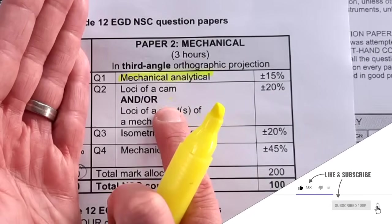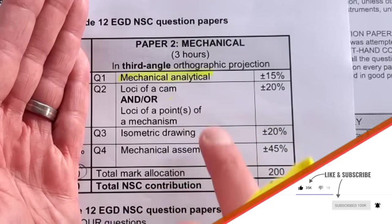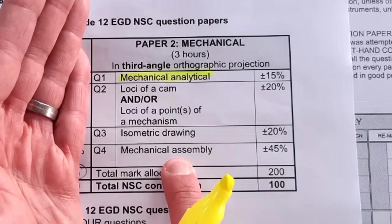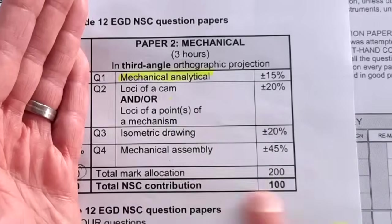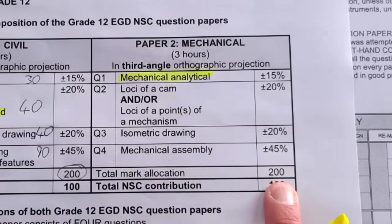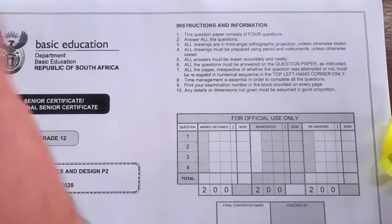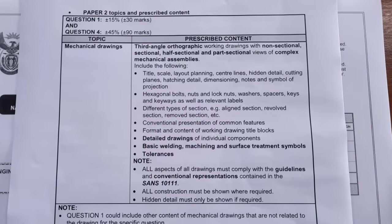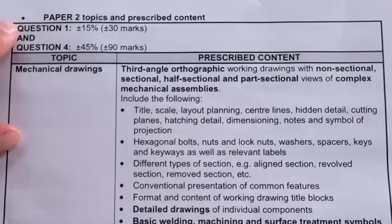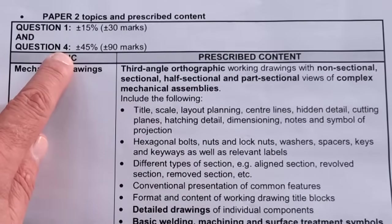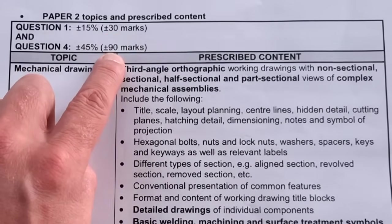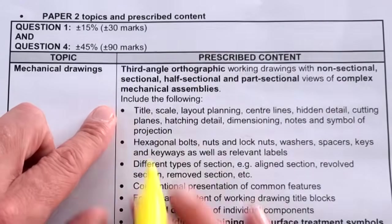Then in the next video we'll look at the loci and the loci of cams that you can expect. We'll look at isometric drawings and mechanical assembly in the last video on this series to get you to your maximum 200 marks. For a start, let's look at what you can expect as part of mechanical. So this covers question one and question four.